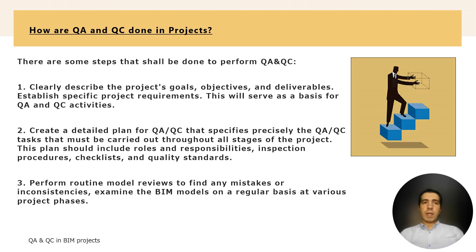You have to establish specific project requirements, because this will serve as a basis for the QA and QC activities. Second, you have to create a detailed plan for the QA and QC, which specifies clearly the quality tasks that must be carried out throughout all the stages of the project. This plan should include roles and responsibilities, inspection procedures, checklists, and quality standards.